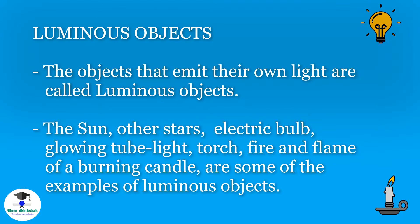Luminous objects. The objects that emit their own light are called luminous objects. The sun, other stars, electric bulb, glowing tube light, torch, fire and flame of burning candle are some examples of luminous objects.